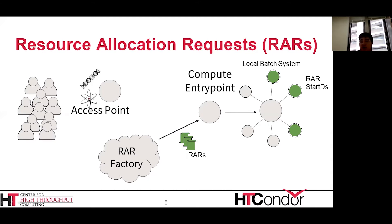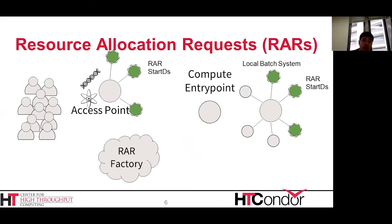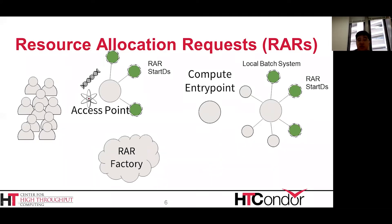The neat thing about the allocation requests is that they will start up some Condor startds. Those startds report back to the community's central manager and are made available to the access point where all the usual matchmaking is involved, and then the jobs start running under the startds. This is a way to basically make a virtual Condor pool across all sorts of potentially geographically distributed resources.